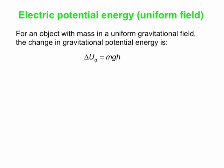M is the mass of the object, g is the strength of the gravitational field, and h is the height the object goes up by. If it goes down, the change of potential energy is negative. H here is a vertical distance because the gravitational field is vertical.